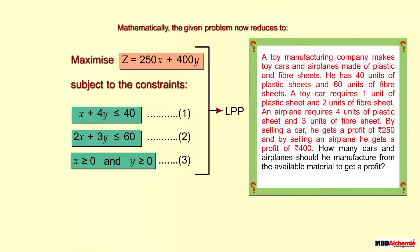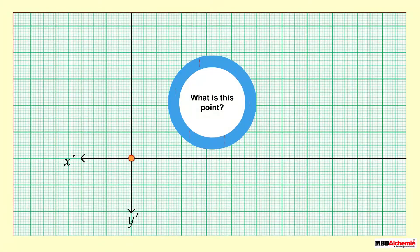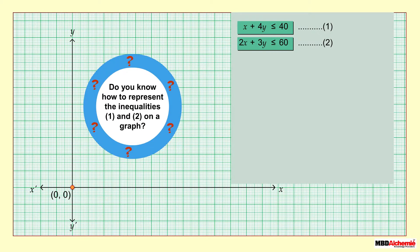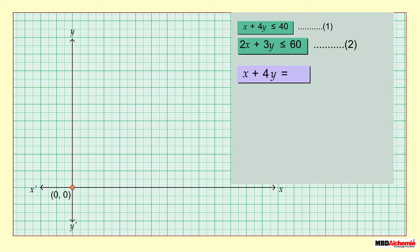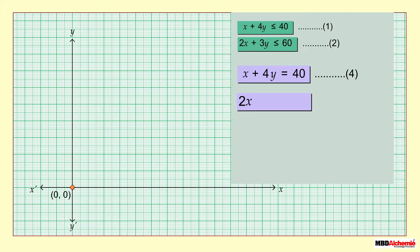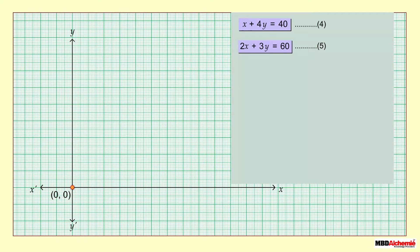Now let's solve this LPP using the graphical method, as the manufacturer wants to find the total number of cars and airplanes to manufacture for maximum profit. Draw the graph with x-axis and y-axis — the origin is point (0, 0). To represent inequalities (1) and (2) on a graph, first convert them to equalities: x + 4y = 40 (equation 4) and 2x + 3y = 60 (equation 5). To plot these straight lines we need at least two points each.